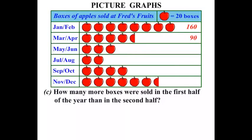How many more boxes were sold in the first half of the year than in the second half? Let's work out the rest of the periods. In May-June, each apple is 20 boxes: 20, 40, 60 — so 60. In July-August: 20, 40 — so 40. September-October: 20, 40, 60, 80 — so 80. November-December: 20, 40, 60, 80, 100, 120, and then half an apple worth 10 boxes — so 120 plus 10 is 130.